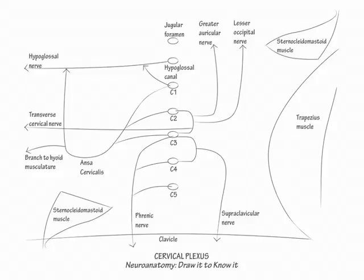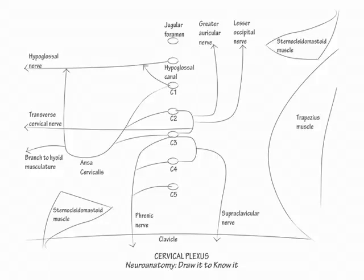The upper hyoid musculature — geniohyoid and thyrohyoid — receive their motor innervation from C1 via the hypoglossal nerve, and the lower hyoid musculature — sternohyoid, sternothyroid, and omohyoid — receive their motor innervation from C2 and C3 via the ansa cervicalis.